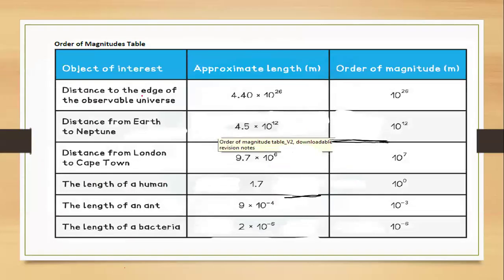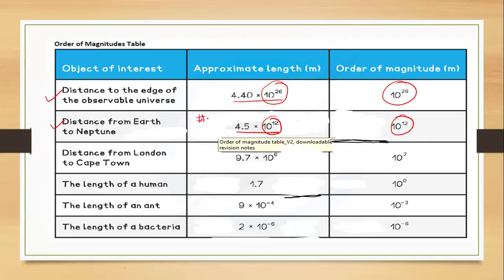There are some key physical quantities we need to know. The distance to the edge of the observable universe is approximately 4.4 × 10²⁶ meters — you just need to know this. The distance from Earth to Neptune is 4.5 × 10¹² meters, so we use 10¹². The distance from London to Cape Town is 9.7 × 10⁶ meters; since 9.7 is greater than 5, it rounds up to 10¹ × 10⁶ = 10⁷.